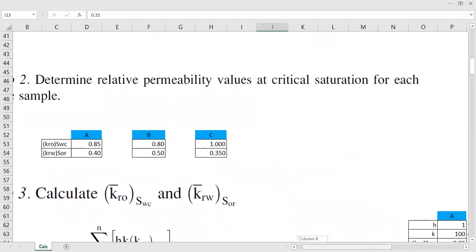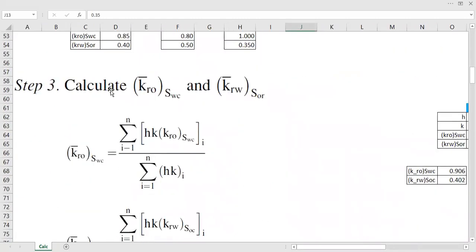So you get this value, very easy. And then we get this. We need to calculate relative permeability of oil bar. The bar means it's average at SWC, connate water saturation, and vice versa, the average relative permeability of water at residual oil saturation.